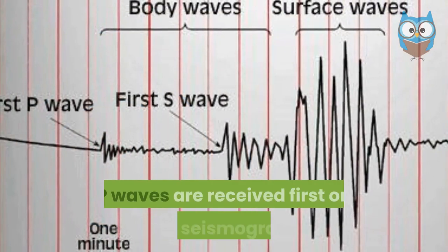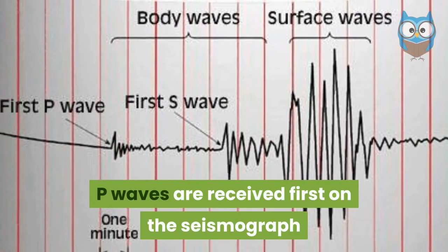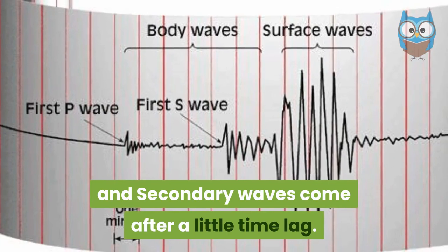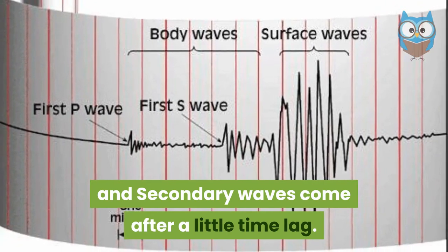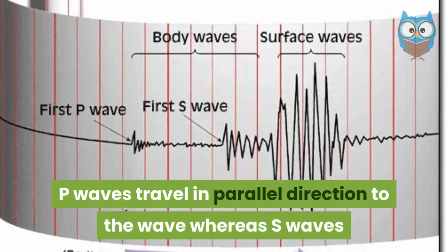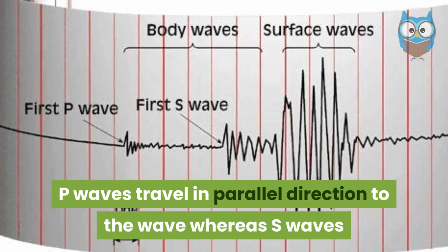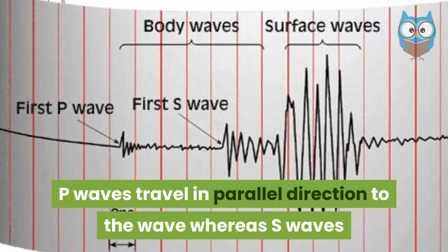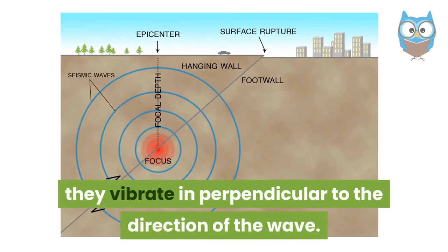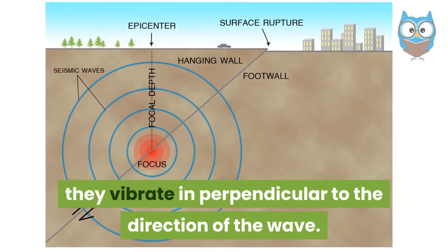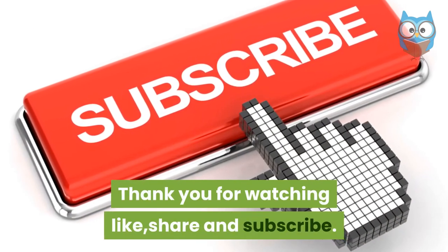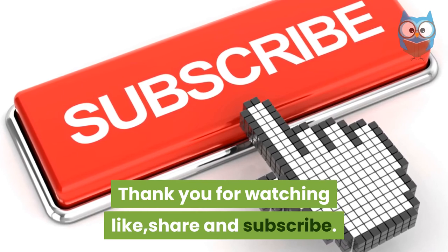P-waves are received first on the seismograph, and secondary waves come after a little time lag. P-waves travel in a direction parallel to the wave propagation, whereas S-waves vibrate perpendicular to the direction of the wave.